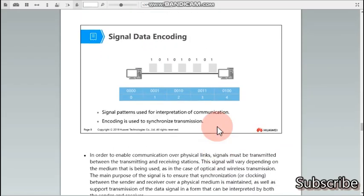Now, how we do the signal data encoding. You can see there are two end systems and data is being sent from one end station to the other end station in the form of bits. It's not necessary that only one is being sent in this bit. We do the data encoding in this network. If there is one, that means the data is triple zero one. If it is zero, it's four zeros. If it is two, it is zero zero one zero. If it is three, it is zero zero one one, or if it is four, it is zero one zero zero. This is the pattern which is followed to send the values in the encoding. Signal patterns are used for interpretation of communication and encoding is used to synchronize the transmission.